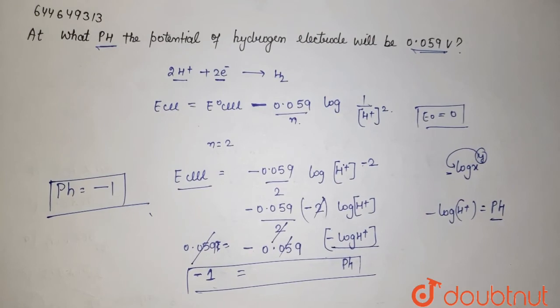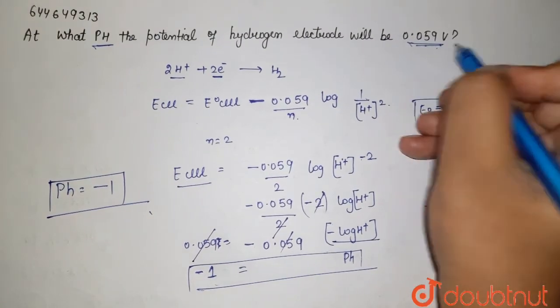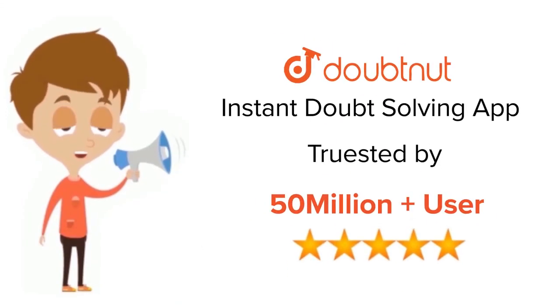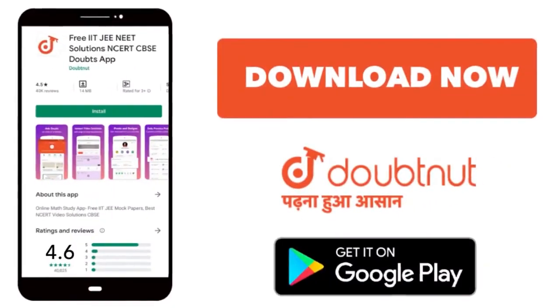At pH -1, the potential of hydrogen electrode will be 0.059 volts. For classes 6 to 12, IIT-JEE and NEET level, trusted by more than 5 crore students, download Doubtnut app today.